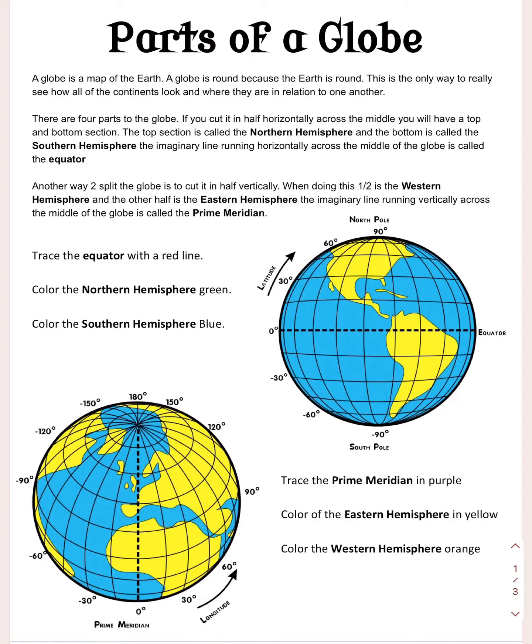For today's work, you're going to trace the equator with a red line. You'll color the northern hemisphere in green and the southern hemisphere in blue. You are going to trace the prime meridian in purple, color the eastern hemisphere in yellow, and the western hemisphere in orange.